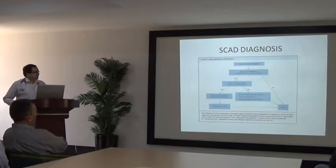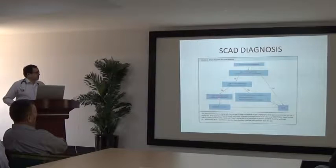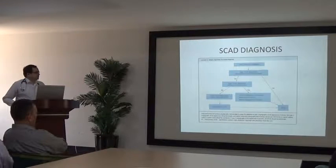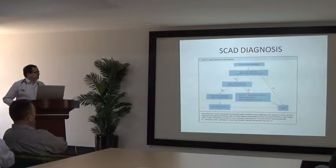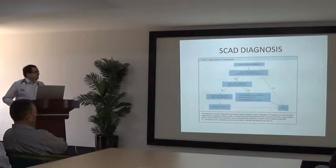In the diagnostic algorithm, if Type I is identified on angiography, SCAD is confirmed. For Type II or III, if it mimics atherosclerosis, OCT or IVUS should be performed to confirm. If there is doubt or possible spasm, nitroglycerin can be administered and OCT or IVUS performed subsequently. If stable, repeat angiography can be done at 4 to 6 weeks. OCT provides superior resolution for identifying true and false lumen and intramural hematoma.